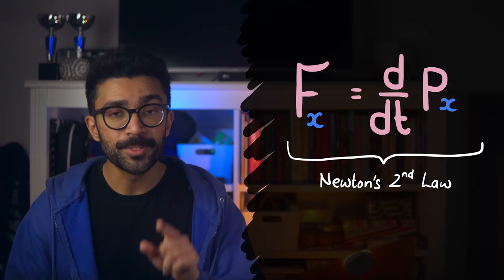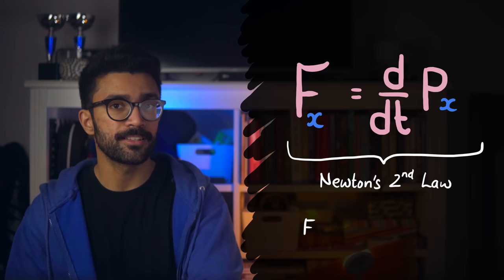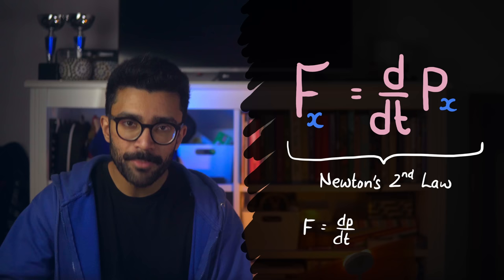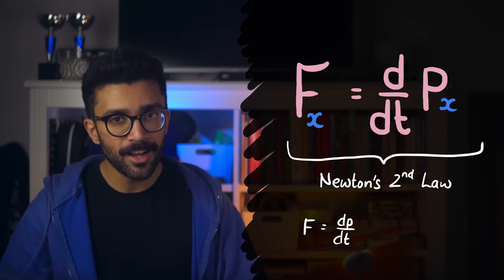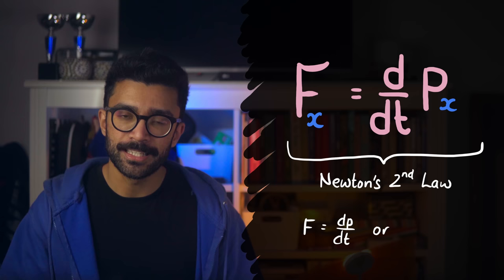Because now, this equation says that the force on our system in the X direction, for example, is equal to the rate of change of momentum in the X direction, or how quickly the momentum changes over time in the X direction. This is exactly Newton's second law, which we more commonly see written as F is equal to MA, or force is equal to mass times acceleration. Anyway, so here's the point.